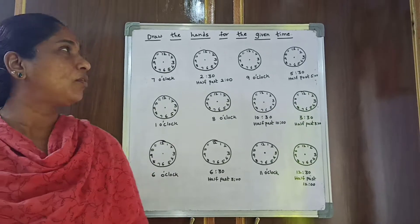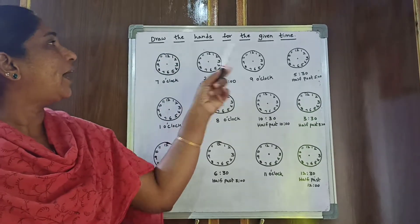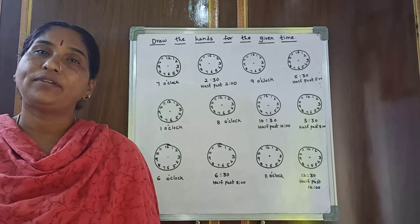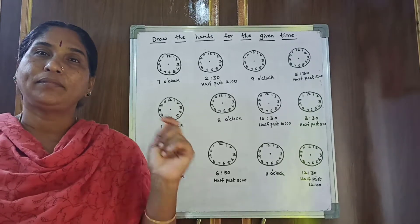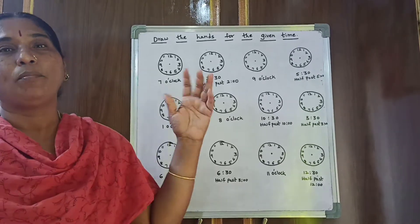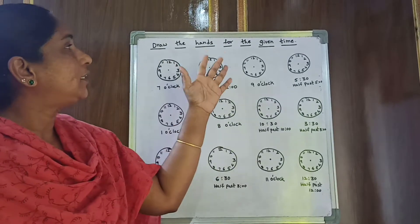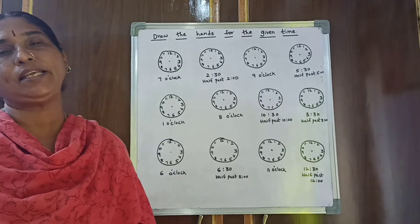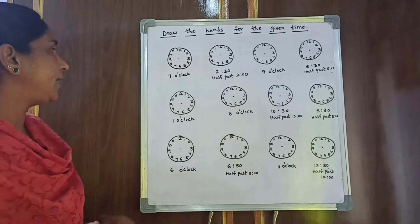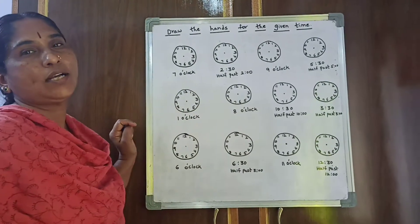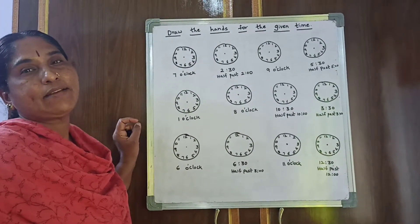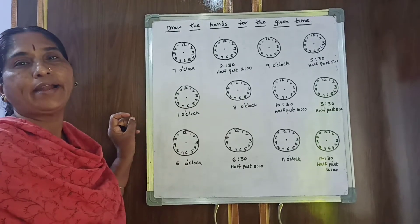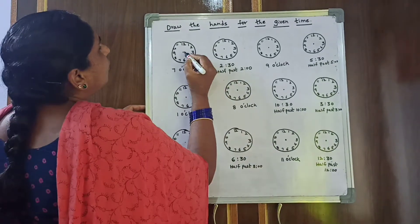Good morning children. Today we are going to learn to draw the hands for a given time. In the earlier video you learned to write a time for given clocks, but now you have to draw the hands for the given time. They will give the time and you have to draw the hands. Now it is 7 o'clock. The hour hand is the short hand.